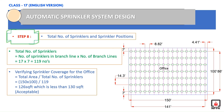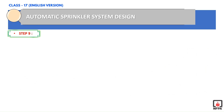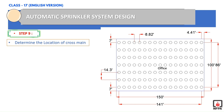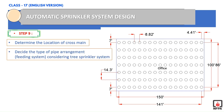Step 9 is the last step. Here we determine the location of the cross main and decide the type of pipe arrangement. Generally, we go ahead with the tree system. If you want to learn about cross mains and tree systems, you need to refer to my video training series on NFPA 13, available on my YouTube channel, Irfan CFPS.